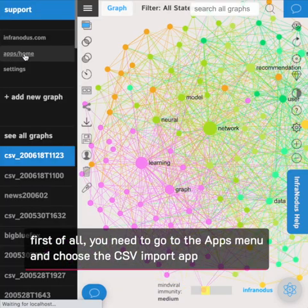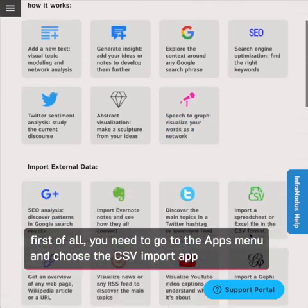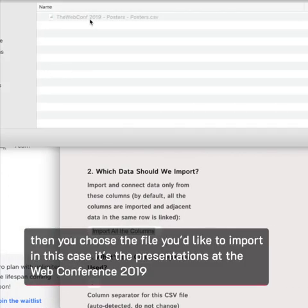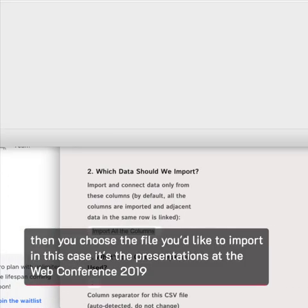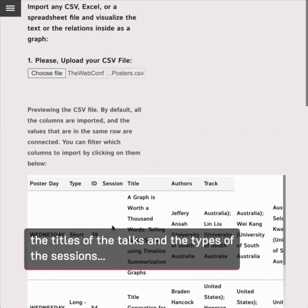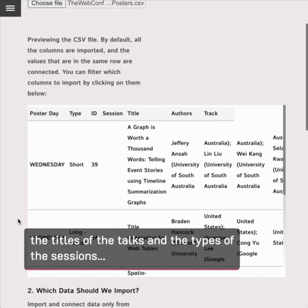First of all, you need to go to the apps menu and choose the CSV import app. Then you choose the file you would like to import. In this case, it's the presentations at the Web Conference 2019, the titles of the talks and the types of the sessions.